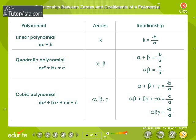Relationship between zeros and coefficients of a polynomial: The zero of a linear polynomial is -b/a. The sum of the zeros of a quadratic polynomial is equal to -b/a, and the product of the zeros is equal to c/a.